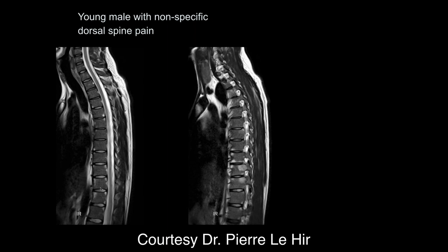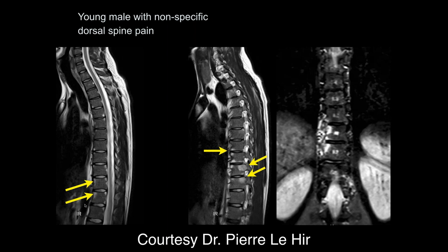I think that's right. On the coronal we can see this clearly. This looks like early ankylosing spondylitis — this is a young male, and in my view this probably isn't too early. This is ankylosing spondylitis.